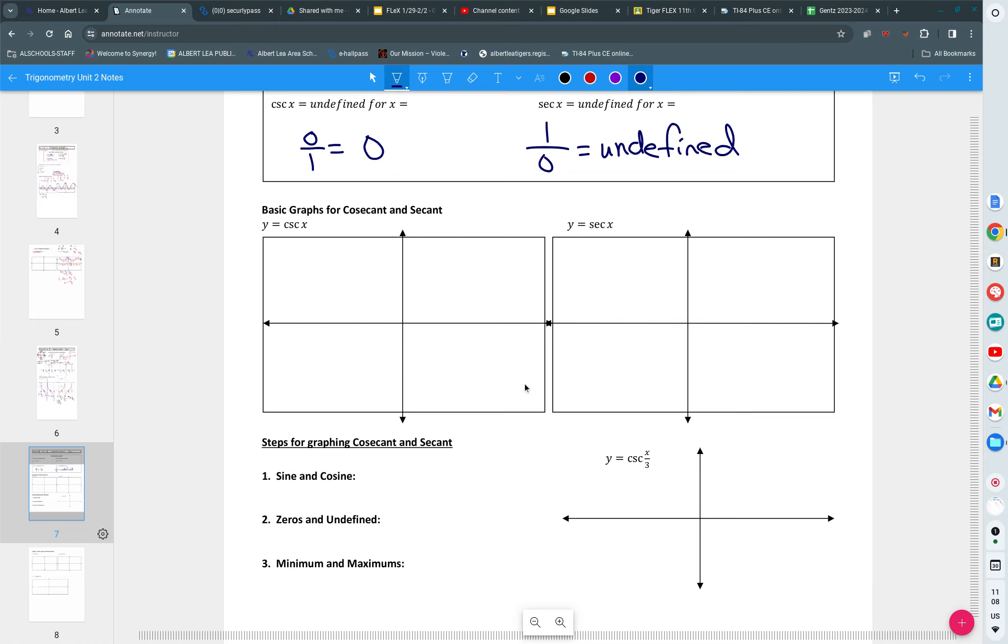Cosecant is the reciprocal of sine, so we are going to graph one over sine of x. And in order to graph one over sine of x, we're going to start by just graphing sine. What can you tell me about the graph of sine? Tell me anything. Makes a wave, starts in the middle. Maximum value of one, minimum value of negative one, period of two pi. So we're going to go up to one, we're going to go down to negative one. If you're getting tired of writing all the tick marks in, that's only normal, don't feel bad.